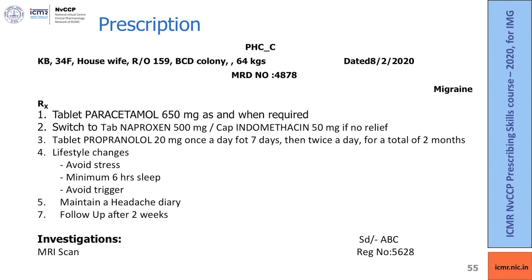The prescription addresses both acute and chronic factors: paracetamol with the option of naproxen or indomethacin for acute relief, and propranolol started at 20 mg once a day for seven days, then twice a day for a total of two months. Associate with lifestyle changes: avoid stress, minimum six hours of sleep, avoid triggers. Maintain a headache diary. Follow up after two weeks and then two months. If headaches are not controlled, refer to a physician.